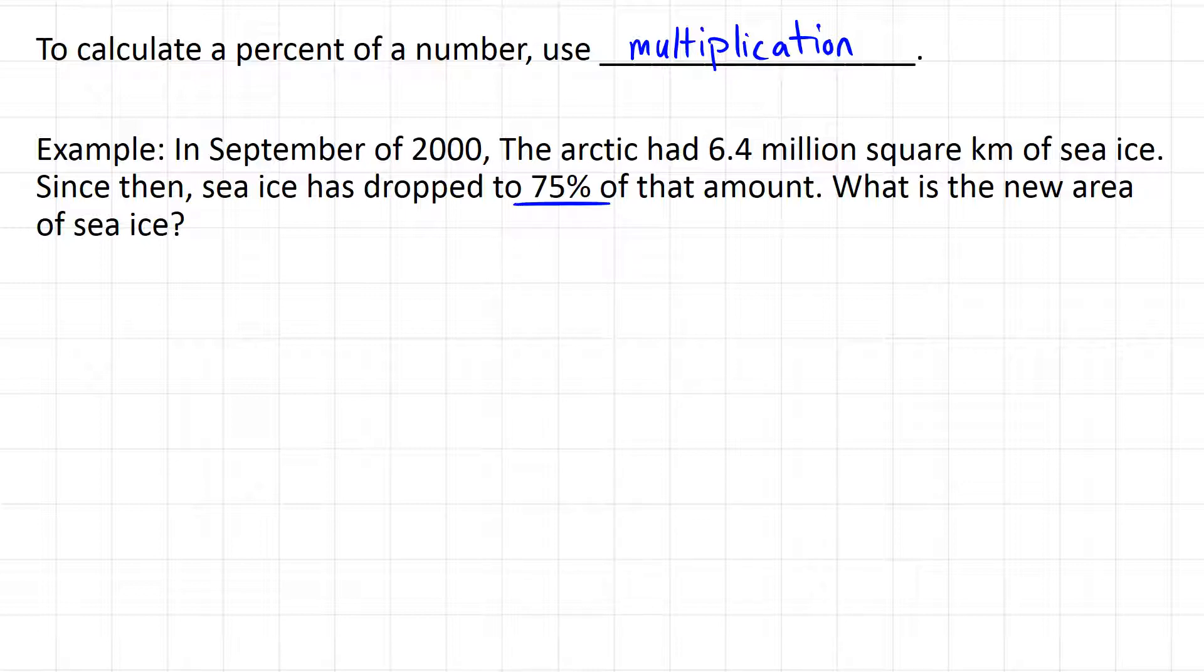So here's our percent, 75%. And when we're doing calculations with percentages we have to turn them back into the decimal form. Now if you don't remember how to do that the quick way, the easy way is to divide by 100 to turn it into a decimal. So 75 divided by 100 is equal to 0.75. This is our percent as a decimal.